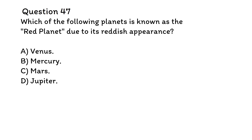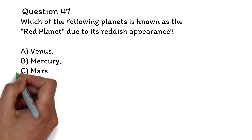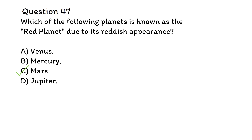Question 47. Which of the following planets is known as the red planet due to its reddish appearance? A. Venus. B. Mercury. C. Mars. D. Jupiter. The correct answer is C, Mars. Mars is commonly referred to as the red planet because of its distinct reddish hue, due to the presence of iron oxide, or rust, on its surface. It's important you know some basic information about planets, like what planet has a ring and what planets are closest to Earth.